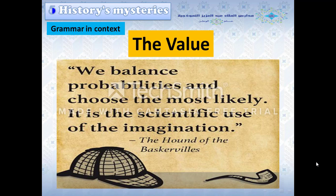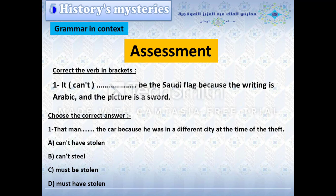The value: we balance probabilities and choose the most likely — it is the scientific use of imagination. The assessment: correct the verb in brackets. Choose the correct answer — the man can't have stolen the car because he was in a different city at the time of the theft. Options: can't have stolen, can't steal, must be stolen, must have stolen.